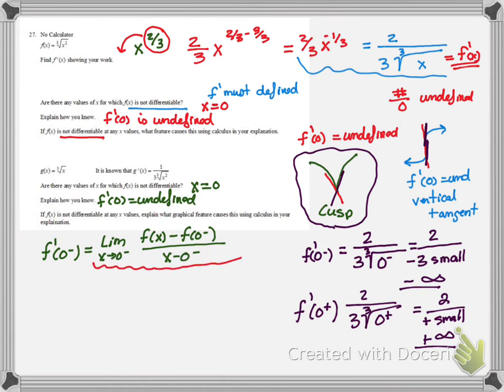So you can practice that for the AP test, because they love that limit definition of a derivative. So now we're going to have 1 over 3 cube root of 0 minus squared. And you can see this is the different part here.